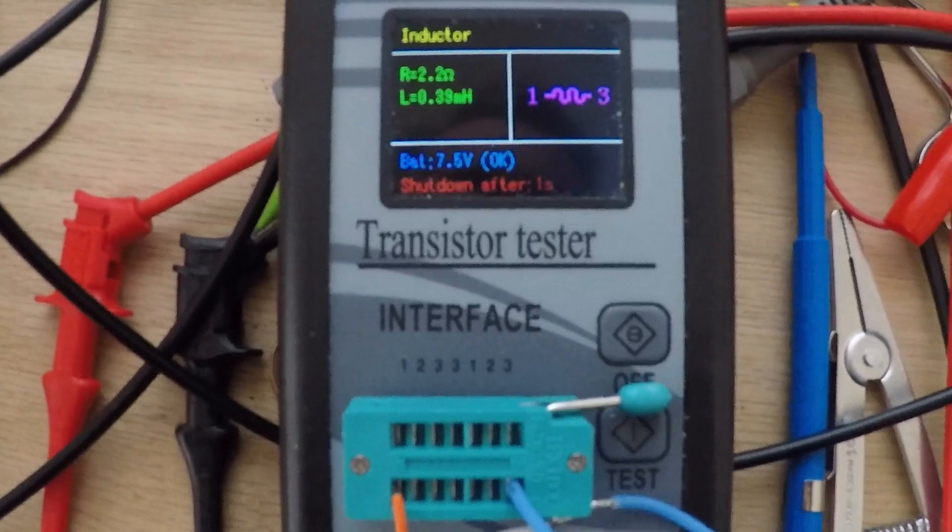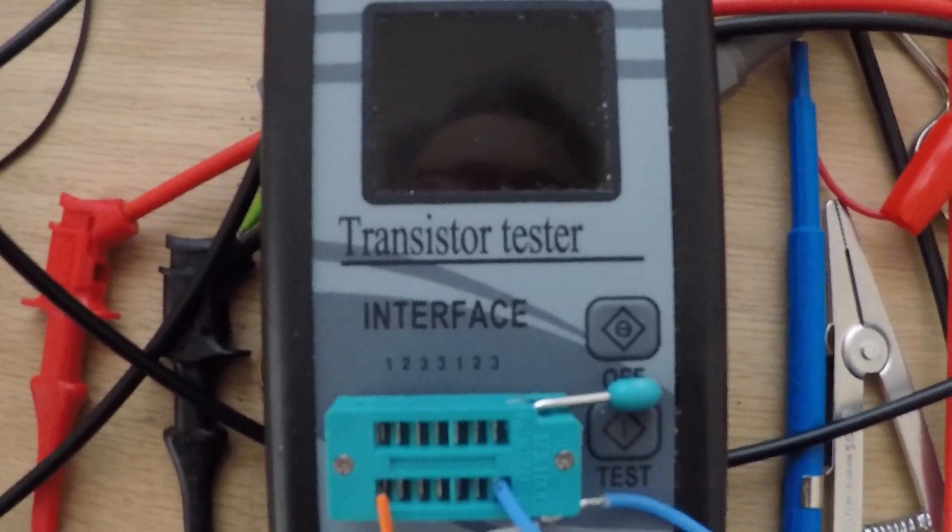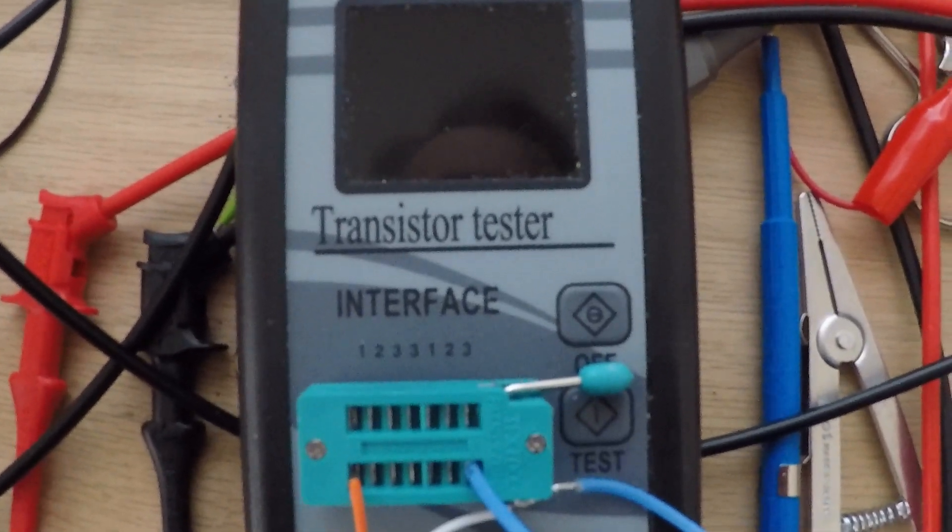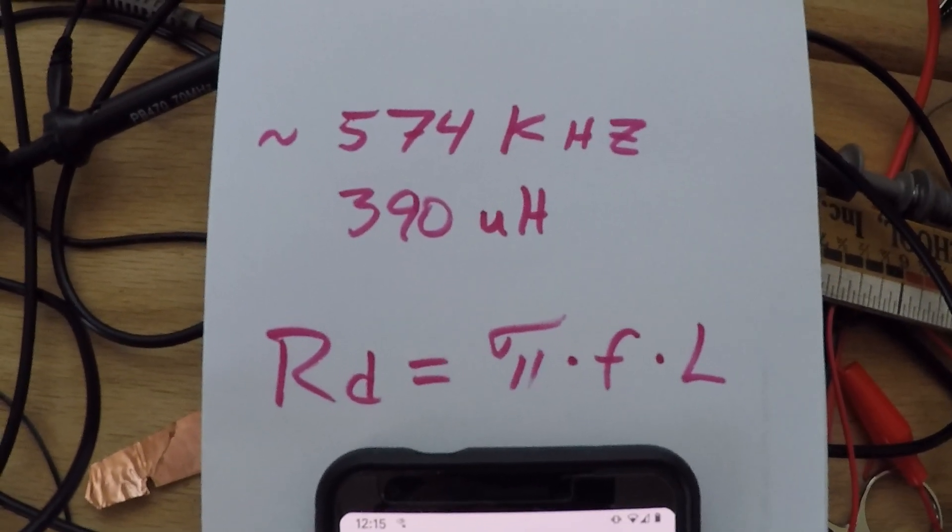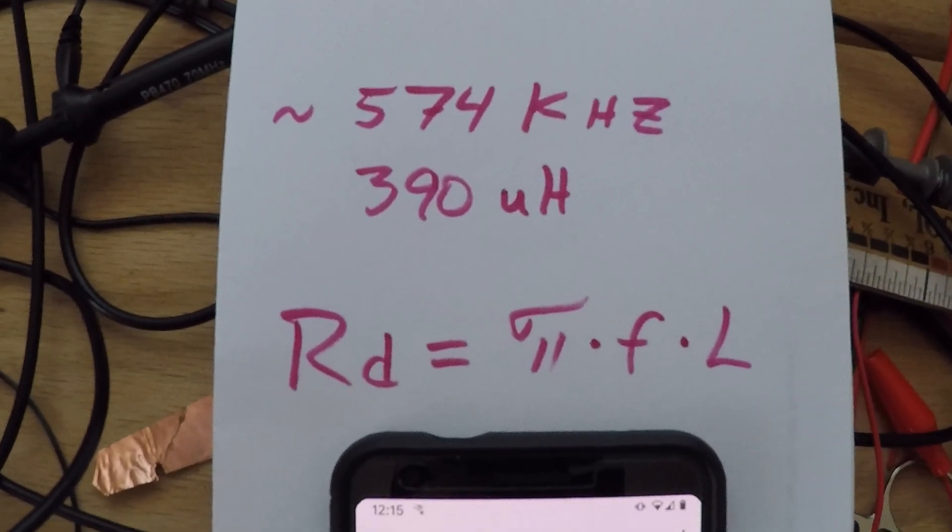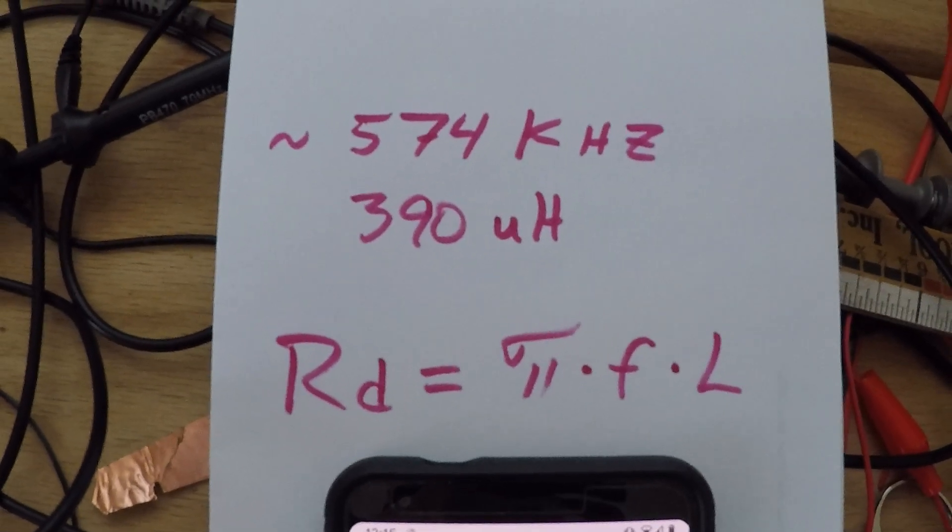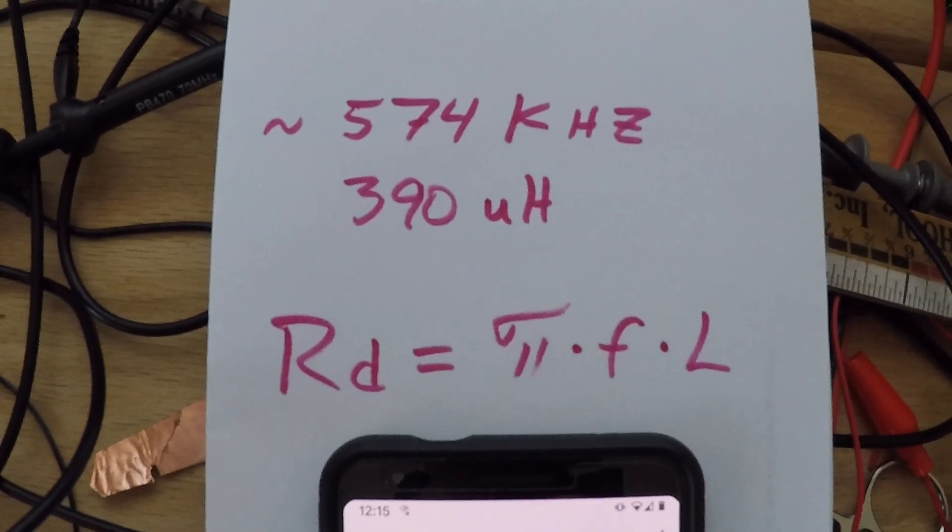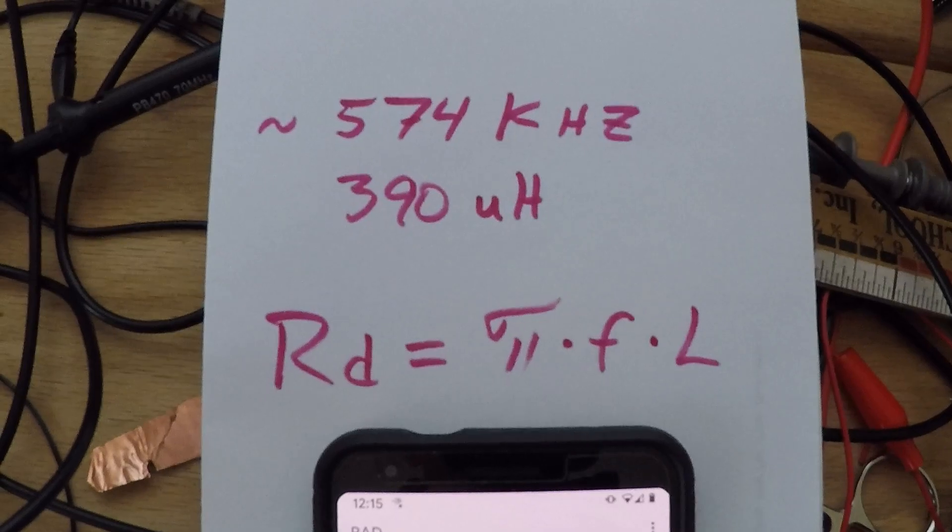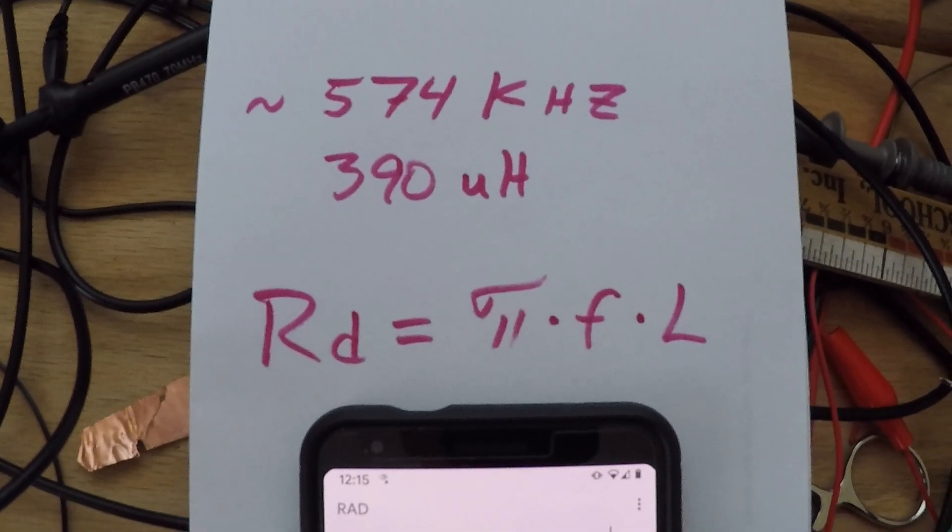So plug that into my calculation. Alright, so here we are with the calculation. There's the formula: damping resistor equals pi times frequency times inductance.